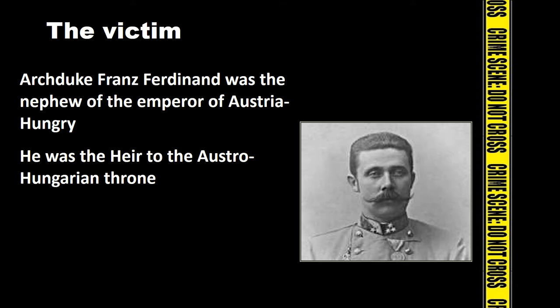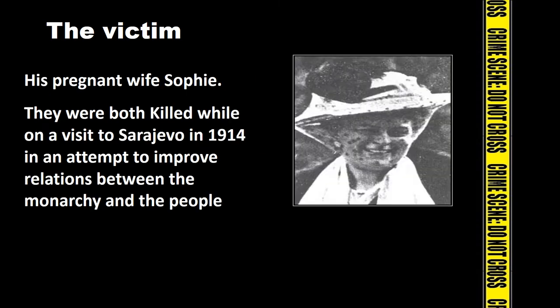The victim was Archduke Franz Ferdinand. He was the nephew of the Emperor of Austria-Hungary and the heir to the Austro-Hungarian throne. The other victim was his pregnant wife Sophia. They were both killed when they were on a visit to Sarajevo in 1914. They were in Sarajevo in an attempt to improve relations between the Monarchy and the people, but ultimately it led to the death of both the Archduke and his wife Sophia.